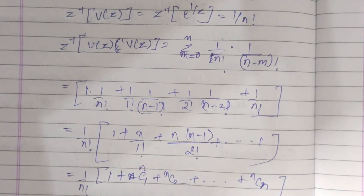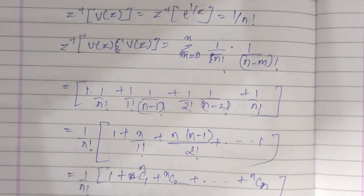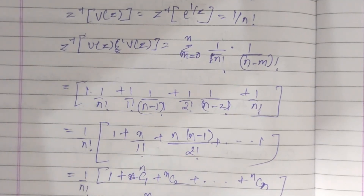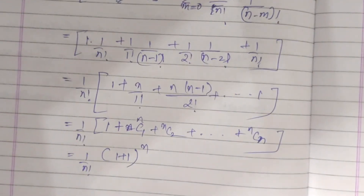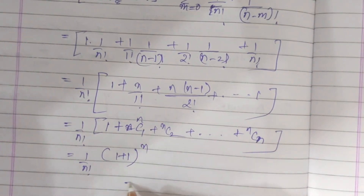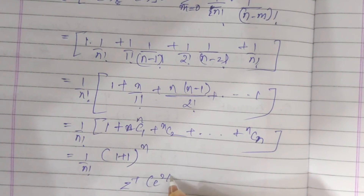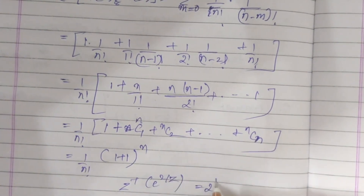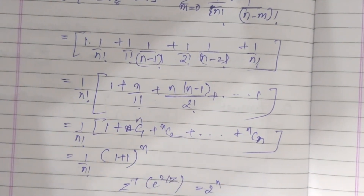That equals (1/n!) · (1+1)ⁿ = 2ⁿ/n!. So the Z⁻¹ of e^(2/z) is equal to 2ⁿ/n!.